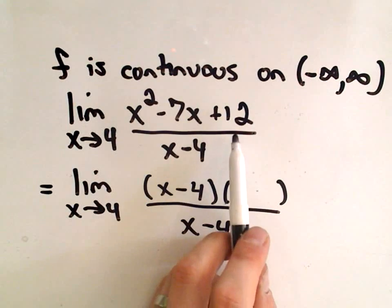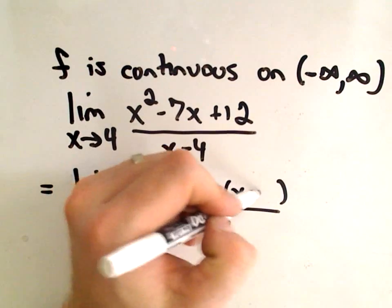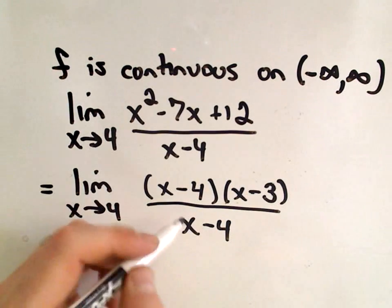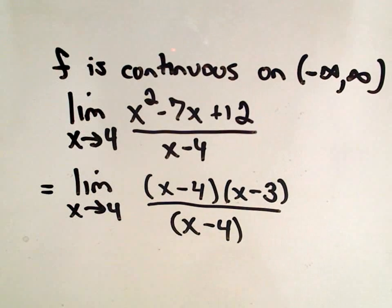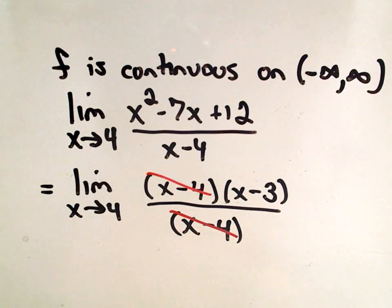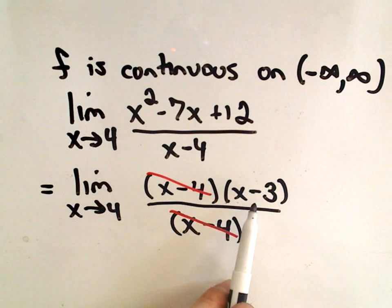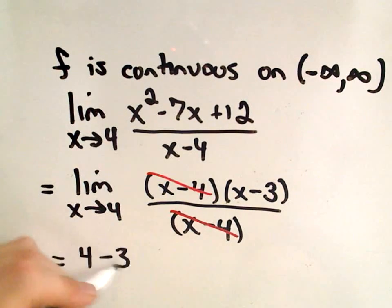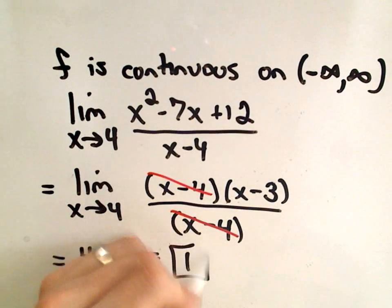Well, negative 4 times what is going to give us positive 12? I would need negative 3. And yeah, hey, that gives us negative 7. So that's the correct factorization of the numerator. The x minus 4, x minus 4 cancel. We're just left with the limit as x approaches 4 of x minus 3. If we plug in our value, we get 4 minus 3, or simply the number 1.